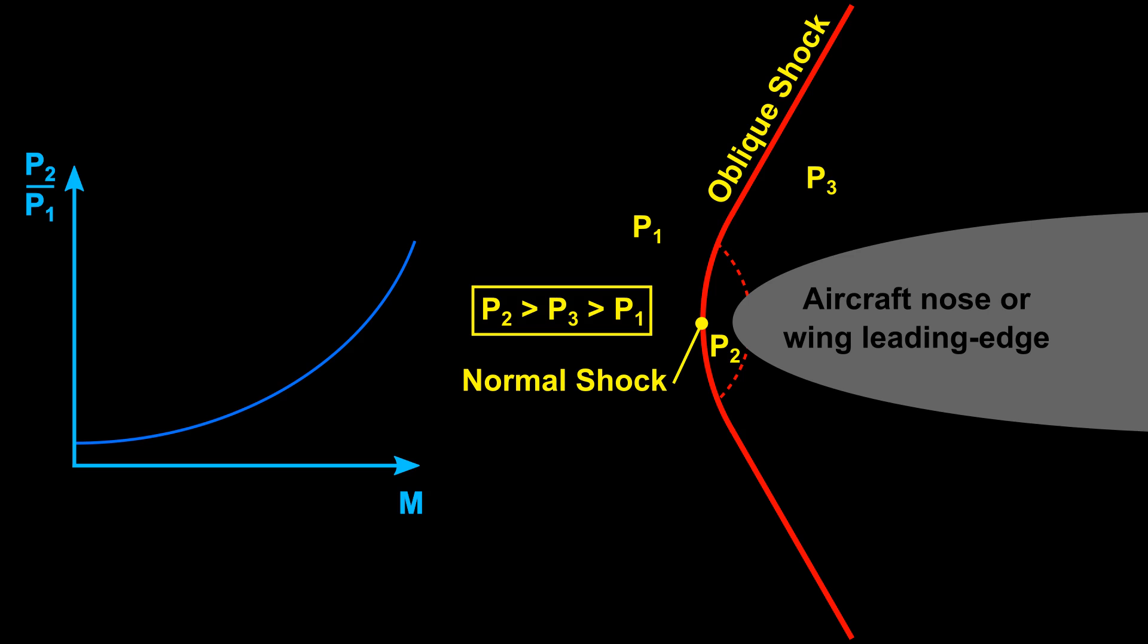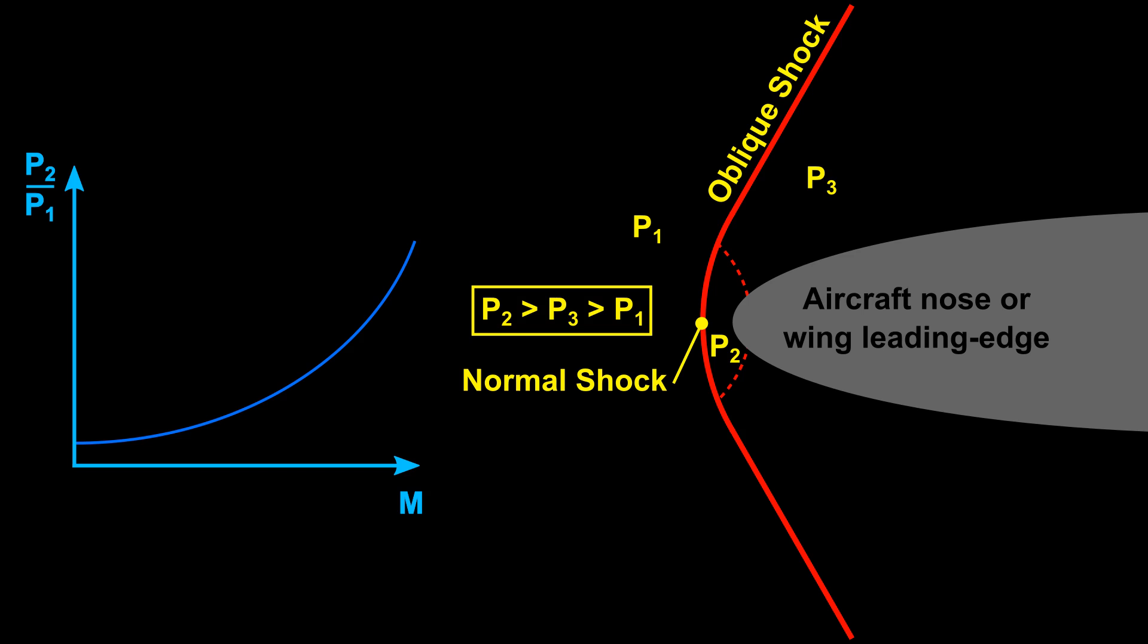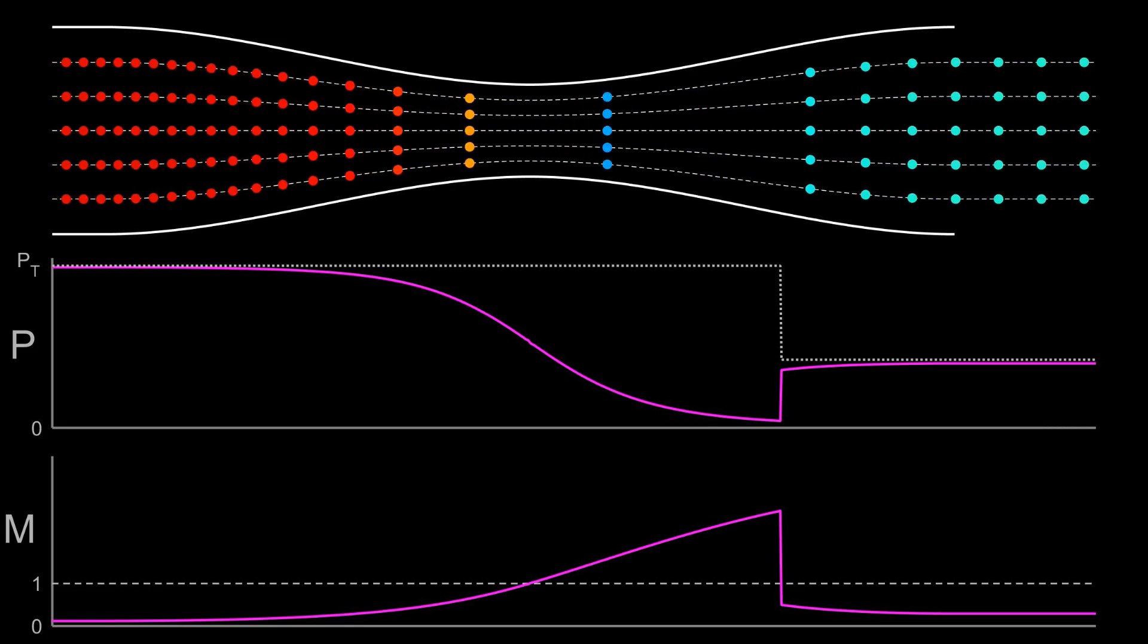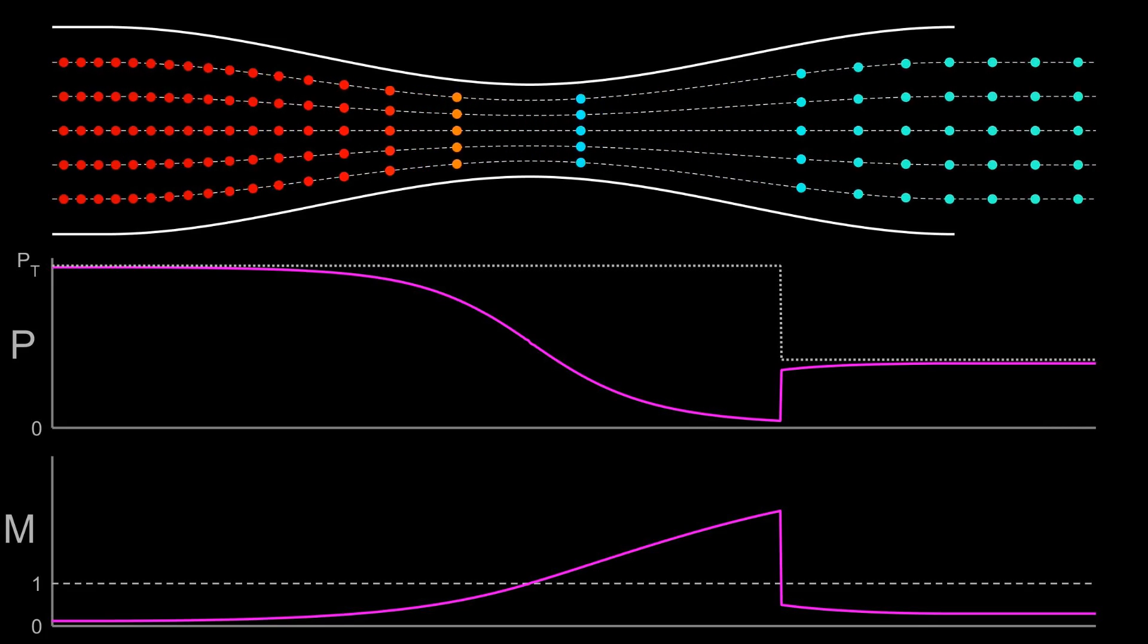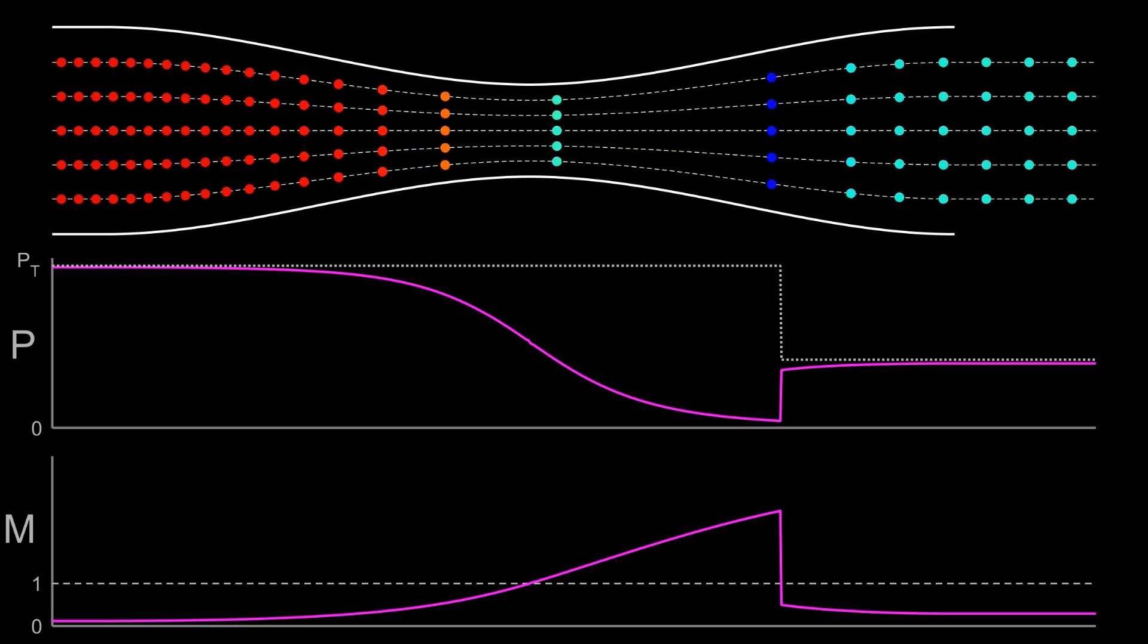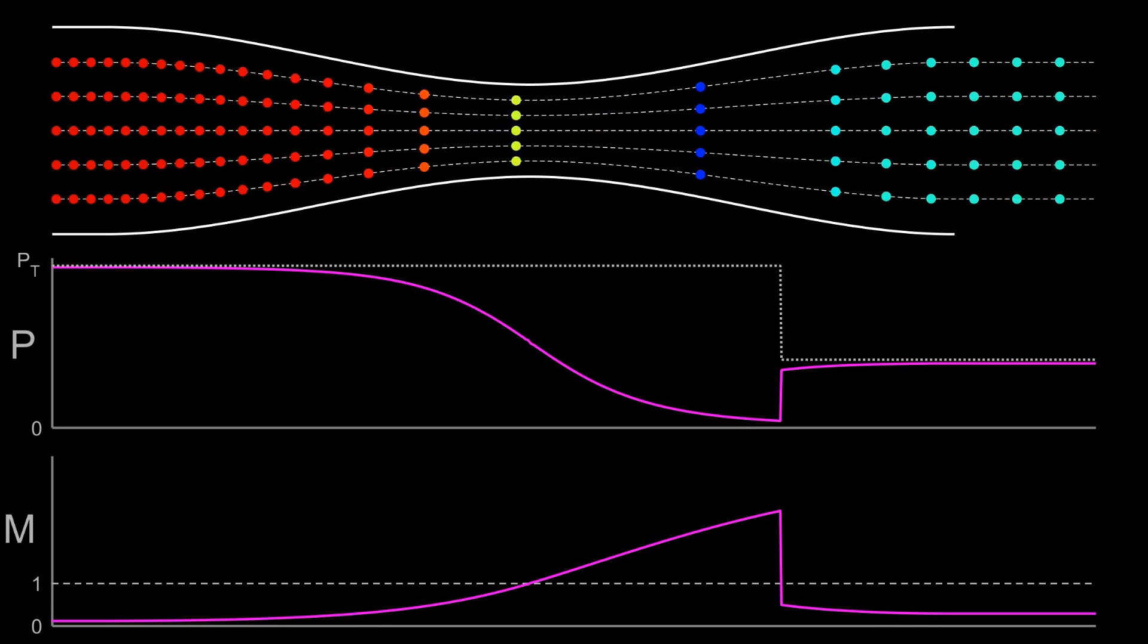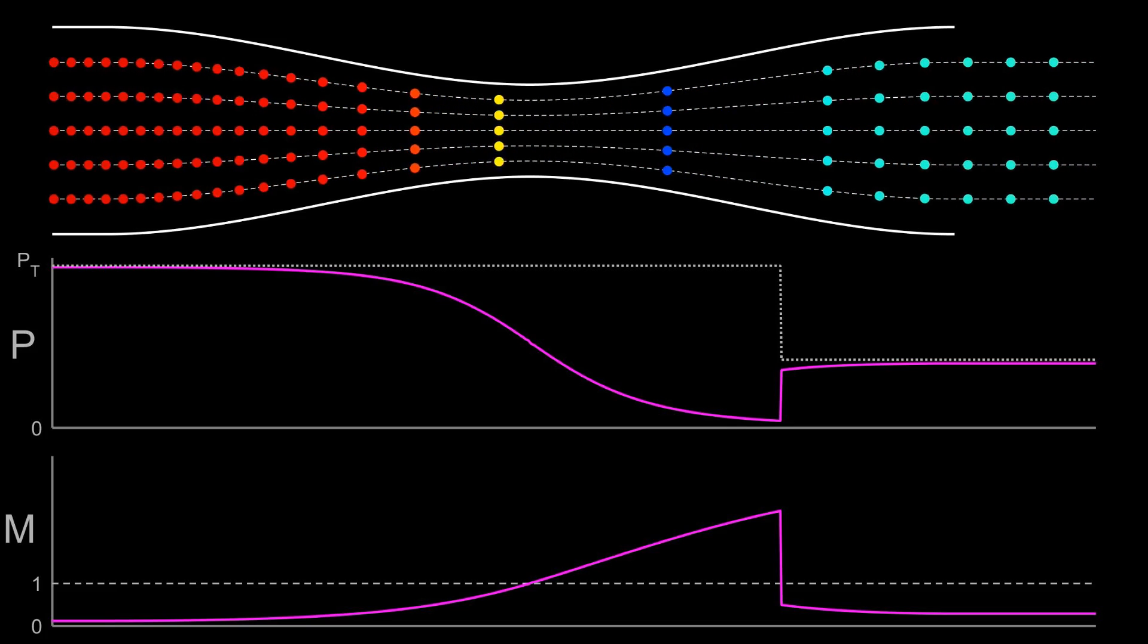One final note on shocks. They are an inefficient compression process and we lose a lot of energy across a normal shock. If you were paying close attention to our transition example before, you would have noticed that the total pressure in the nozzle dropped sharply when there was a normal shock present. And the higher the Mach number, the greater this total pressure loss.